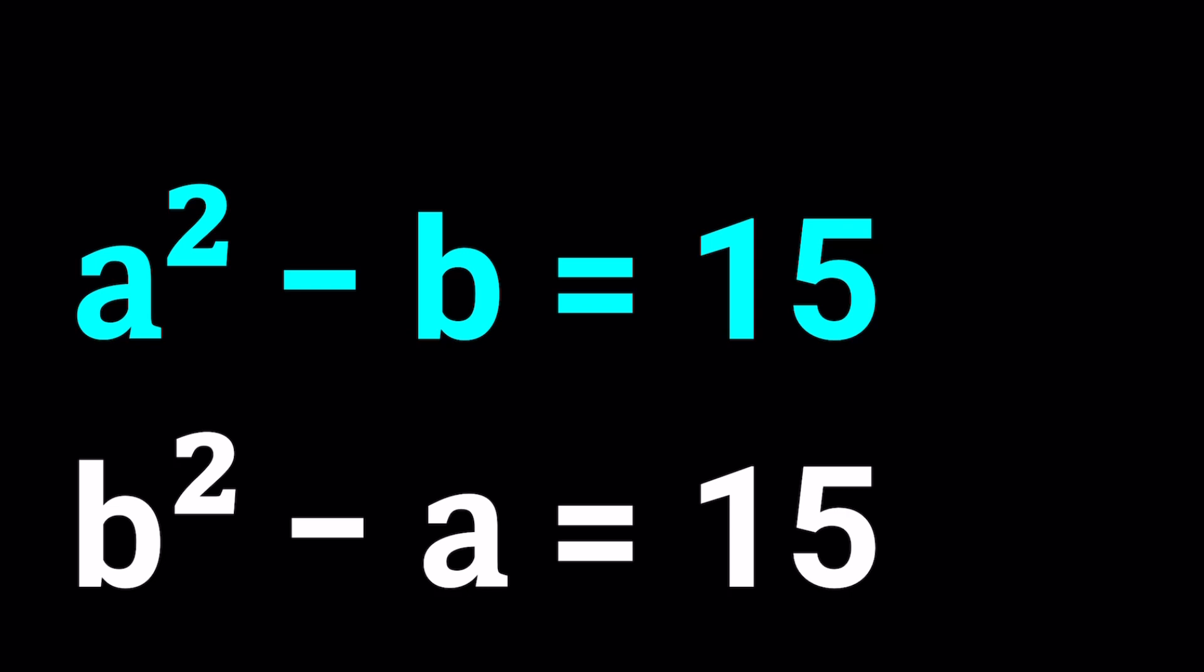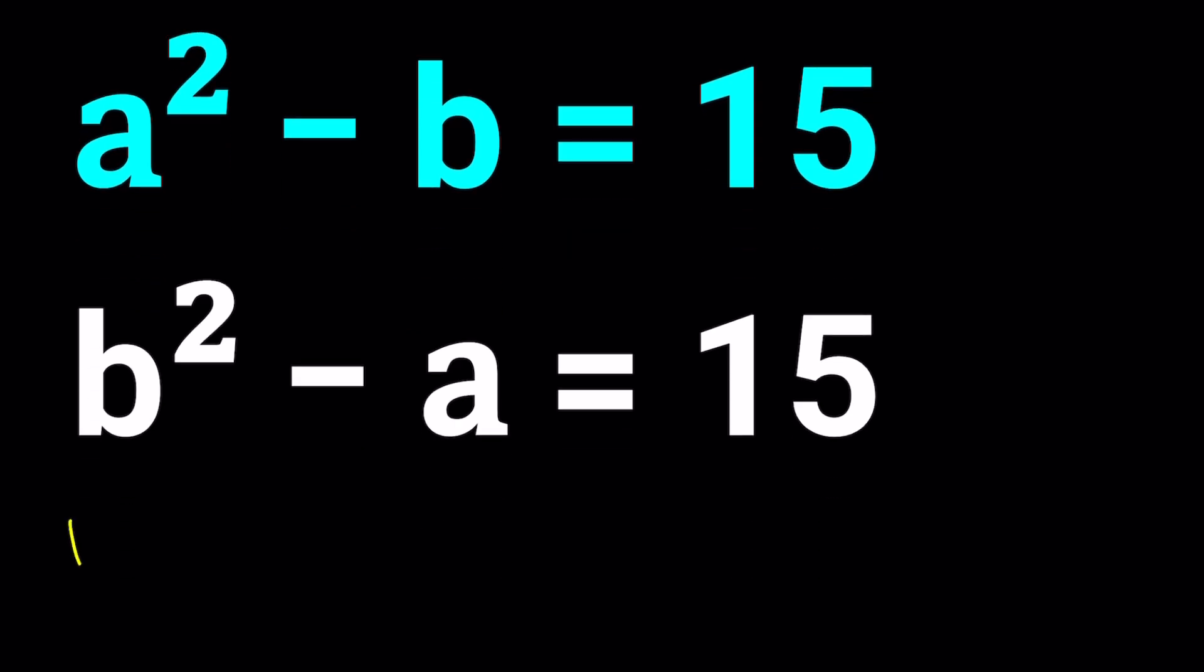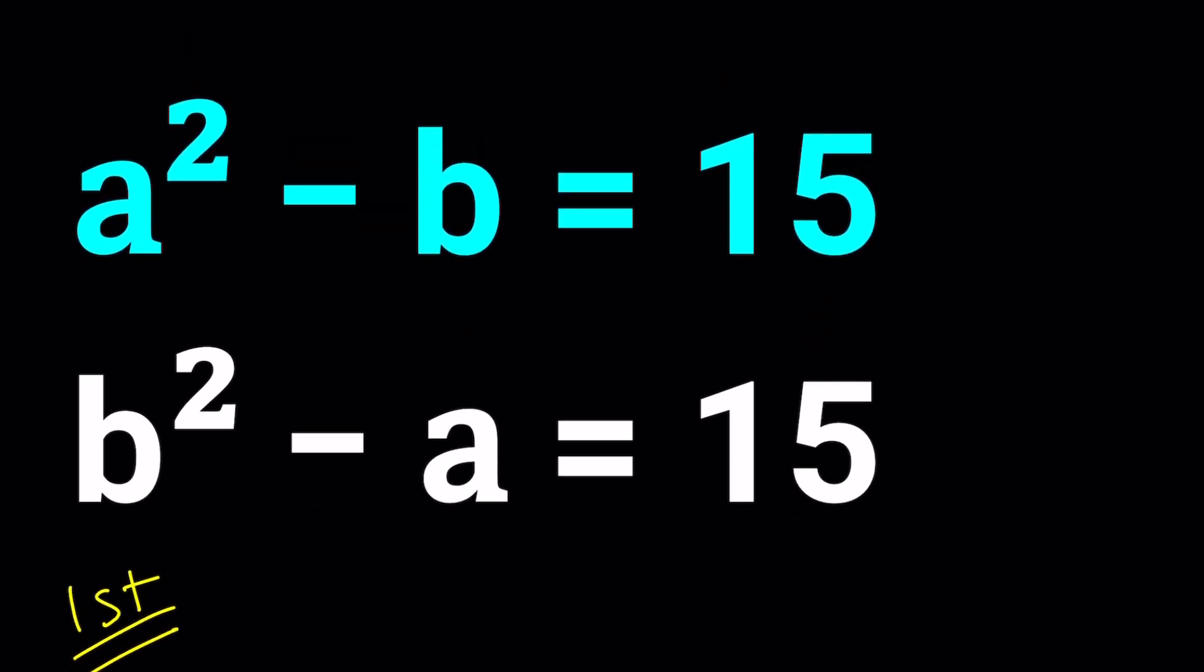I'll be presenting two methods and let's start with the first one. So for my first method, I want to use substitution. Obviously, substitution is a really cool method. And with systems of equations, we use them almost all the time. So let's go ahead and isolate b from the first equation.